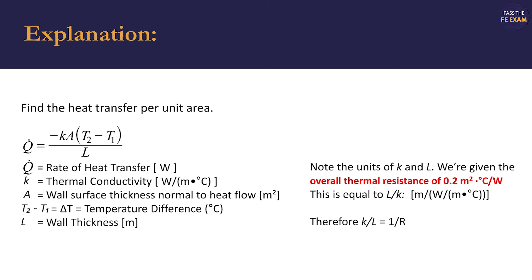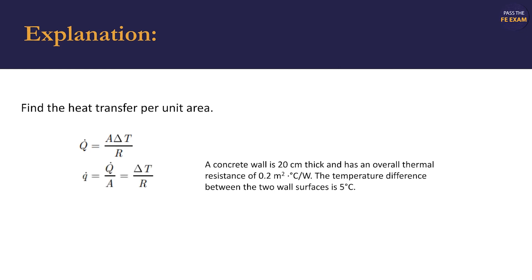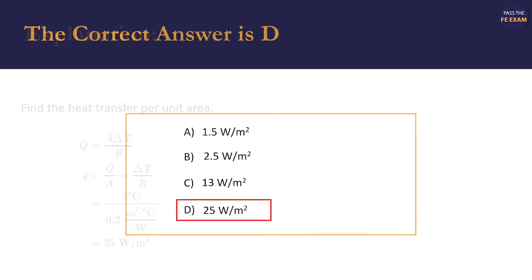We note that dividing the units for L by the units for K, we have a measure of the thermal resistance R. Therefore, K divided by L is equal to 1 over R, and we're given R in the problem statement. Thus, we're able to simplify the equation to Q dot equal to A times delta T divided by R. Recall that the answers are given to us in watts per square meters, so we are searching for Q dot divided by A. Substituting in our values for delta T and the thermal resistance, we find that the correct answer is D, 25 watts per square meter.